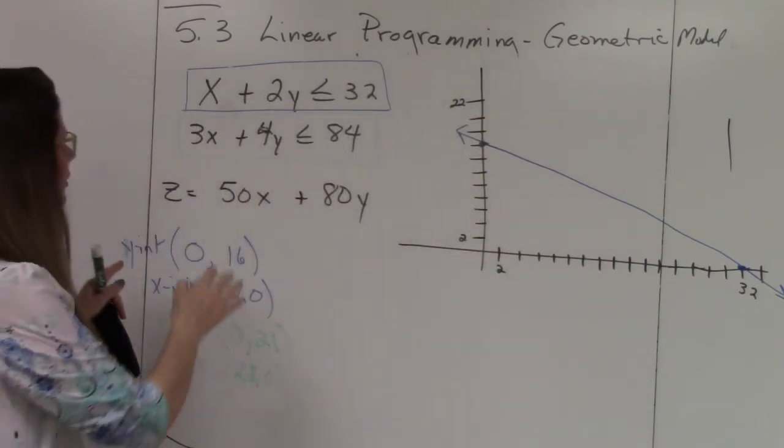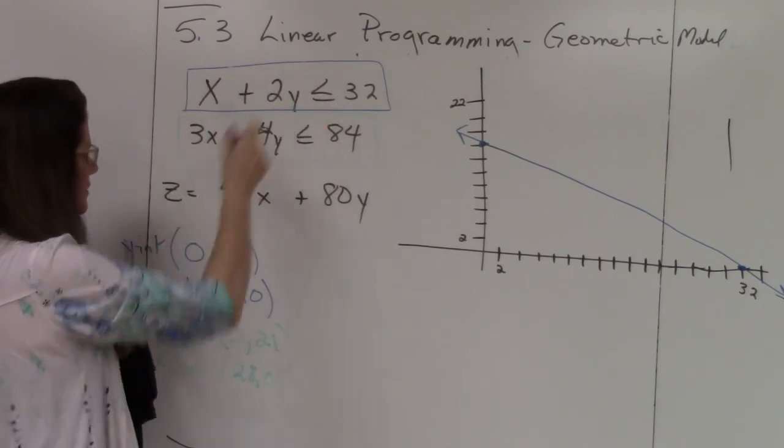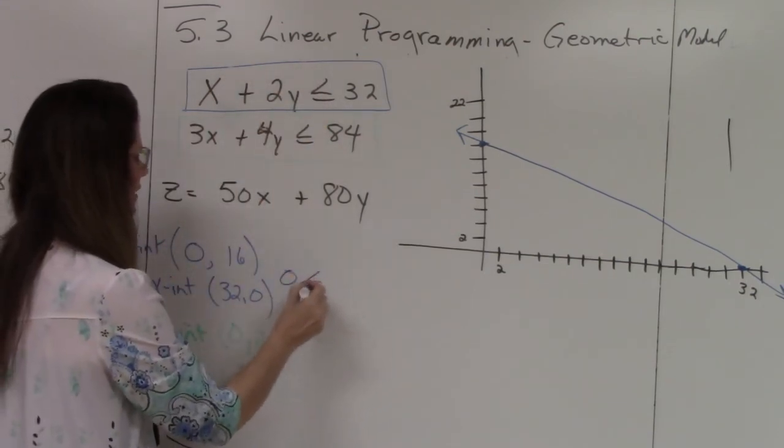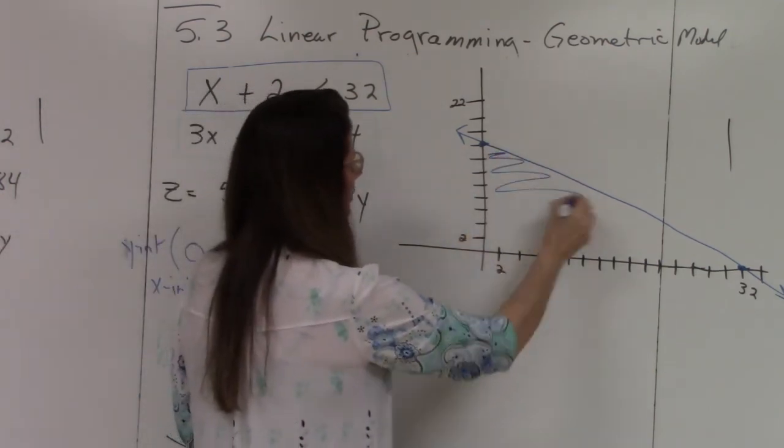Now I'm going to do my test. Remember the test point, 0, 0 is the test point. So 0 is less than 32. This is a true statement. So I'm going to shade below.